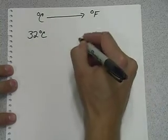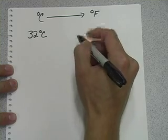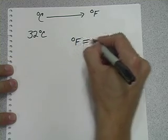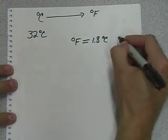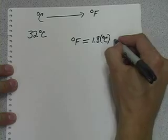Our equation to go the opposite way into degrees Fahrenheit is degrees Fahrenheit equals 1.8 times degrees Celsius plus 32.